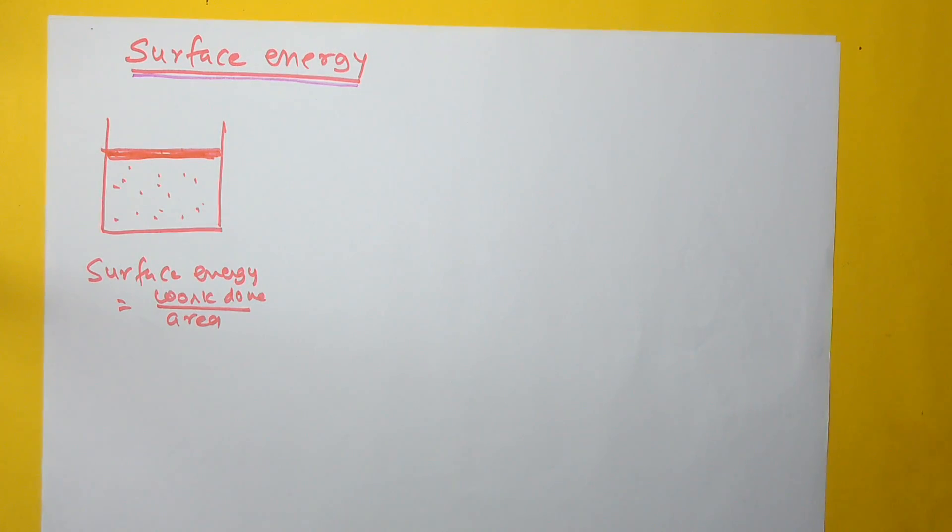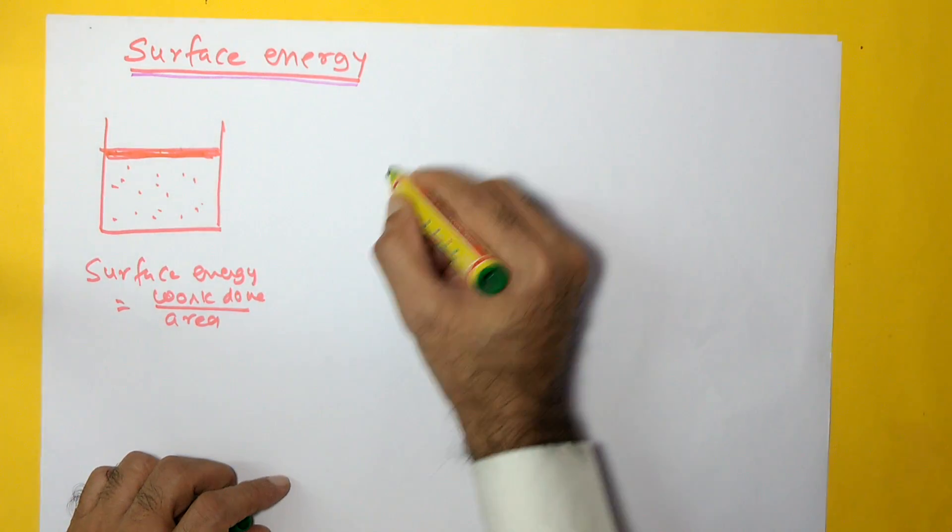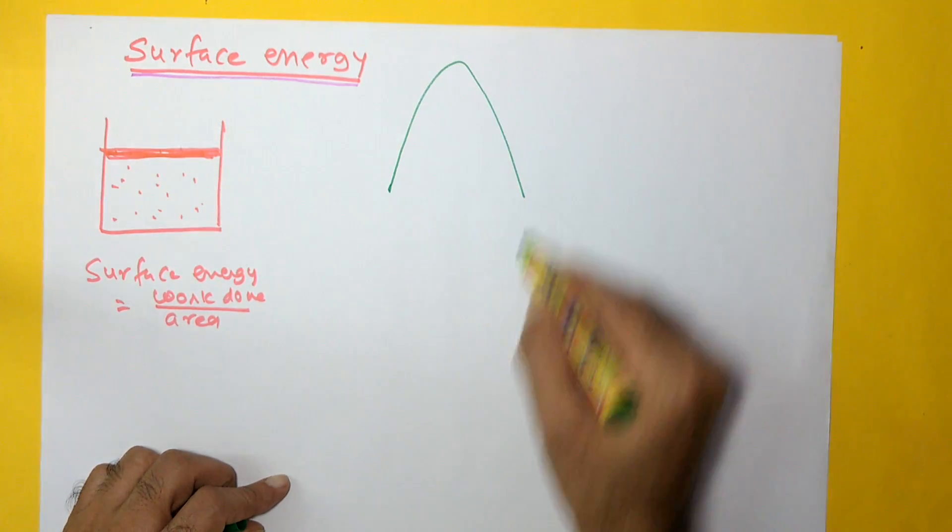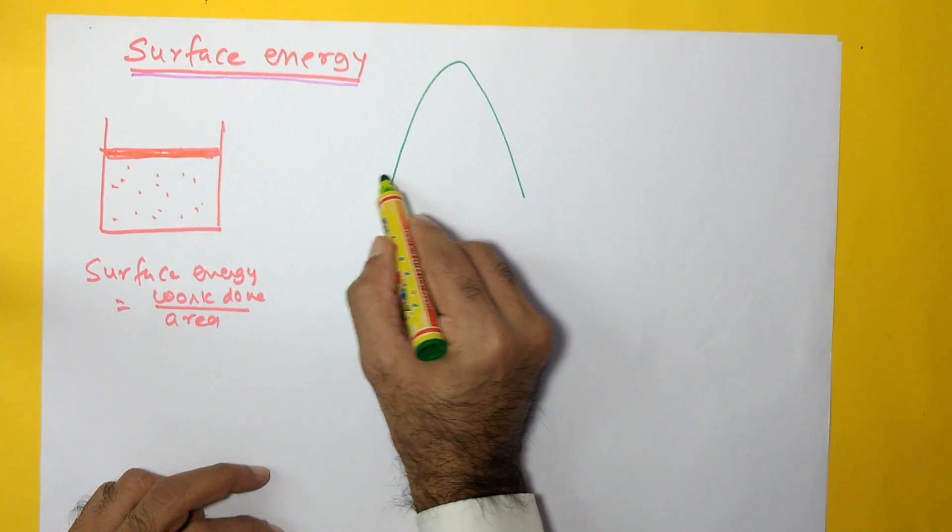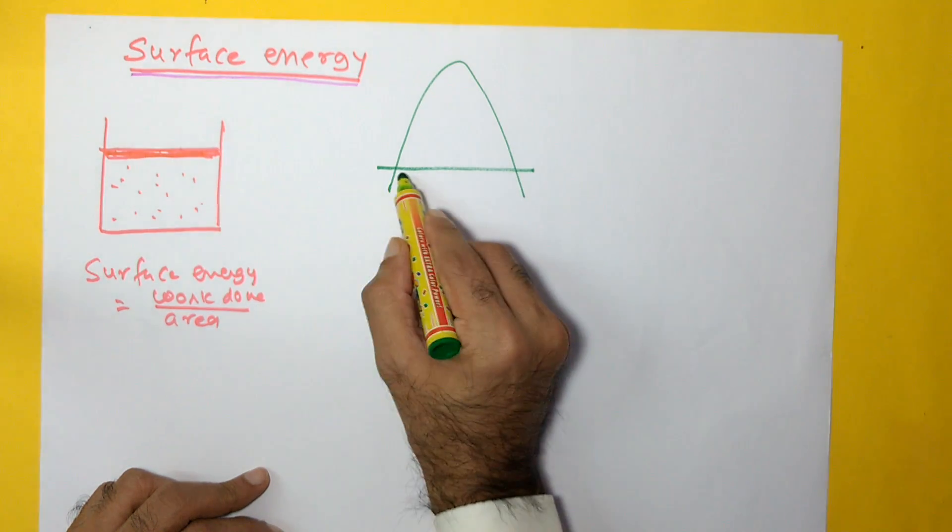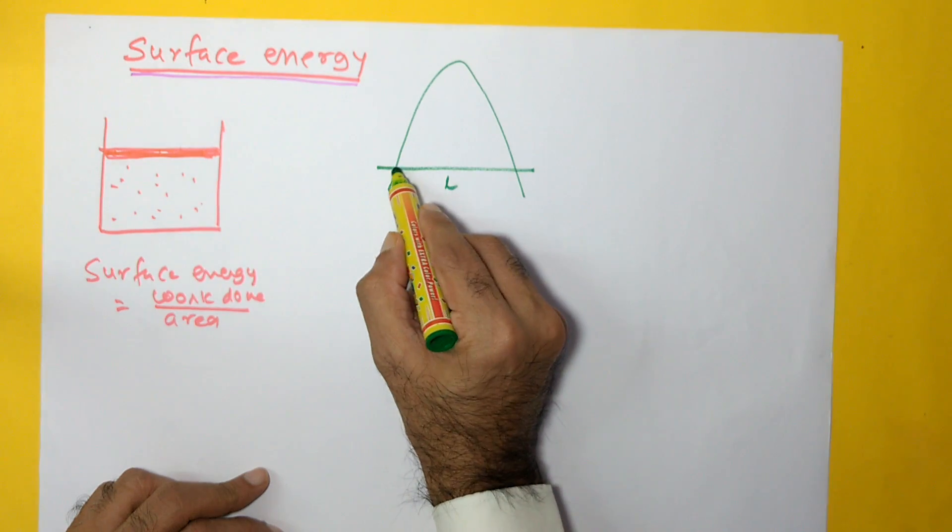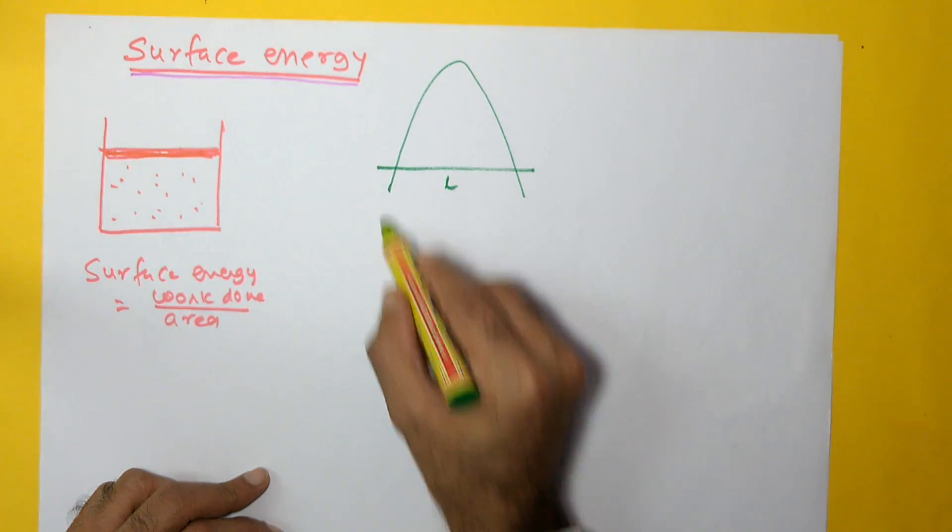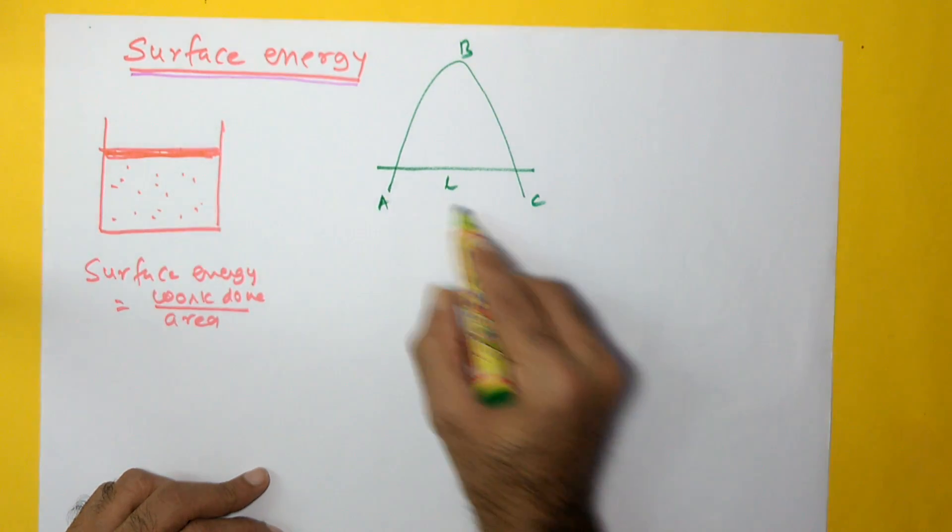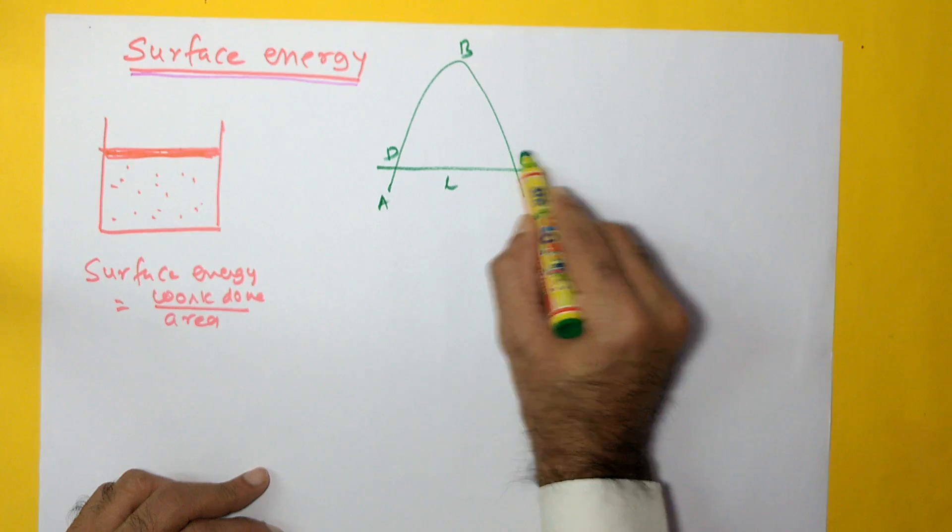This is the background under which we will be looking at surface energy and try to see how exactly we define or understand it. What we will do is take a simple example. Let us say we have a thin wire of particular C shape. And let us say we have another wire which is horizontal kept on this. Let us say the length of this particular wire is L and this wire can slide onto this. Let us call this wire as A, B, C and this wire as D, E for example.